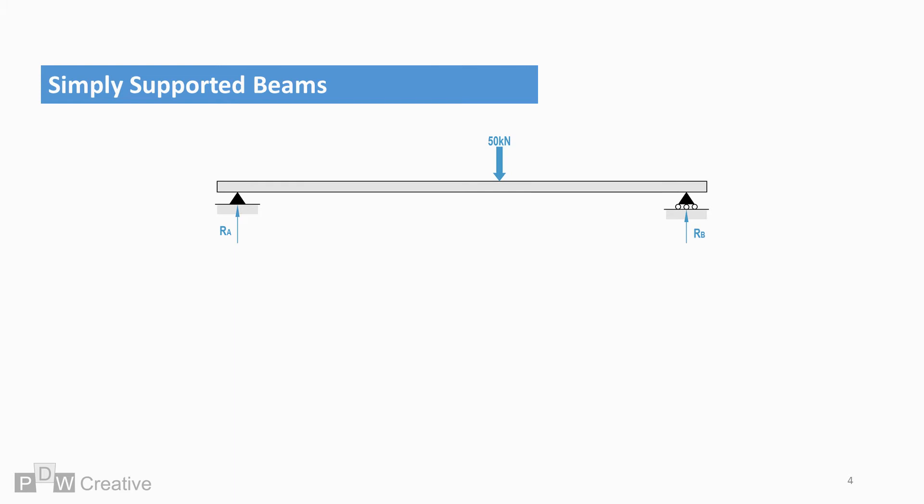A supported beam under load is in equilibrium due to a reactionary force at each support, in this case RA and RB. The load, focusing downward, is counteracted by an equal force acting in the opposite direction.